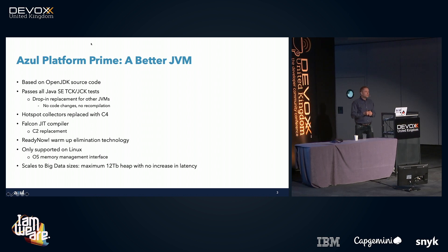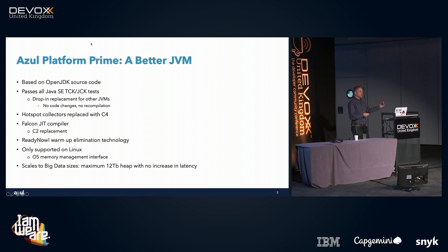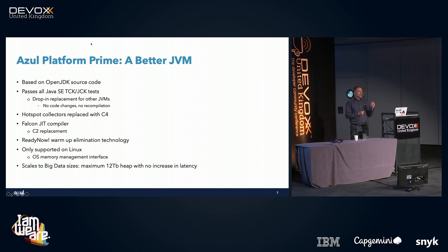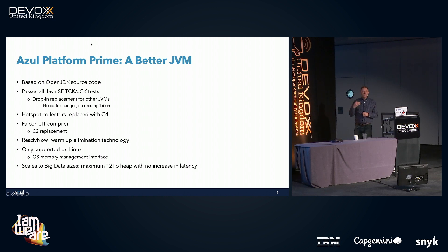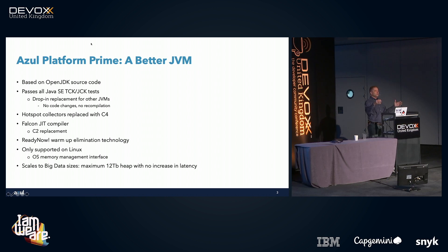In terms of the changes we made, addressing those three areas: first, we replaced all the garbage collectors in HotSpot with one called C4 — so there's no G1, no Shenandoah, no ZGC, no CMS, no serial collector. Second, we replaced the heavy-optimization half of the JIT compiler with one called Falcon. Third, to address warm-up time, we have what we call ReadyNow — the idea of taking a profile of a running application so the next time you run it, you can use that profile to avoid a lot of the work you'd normally do.